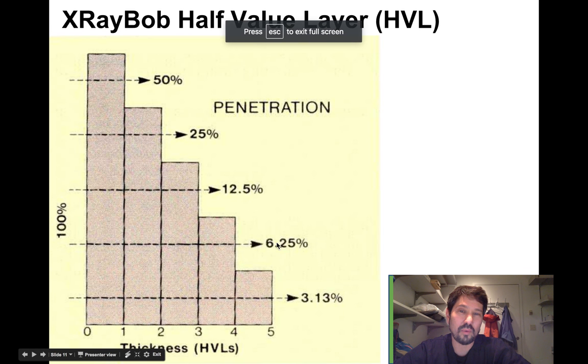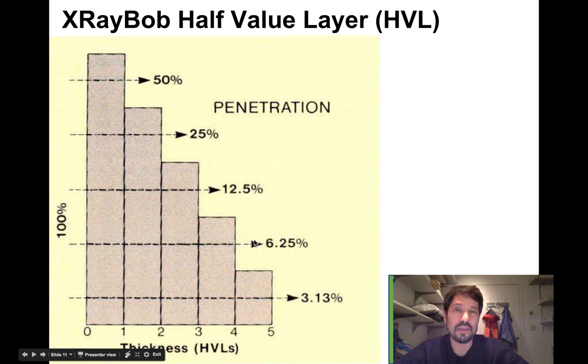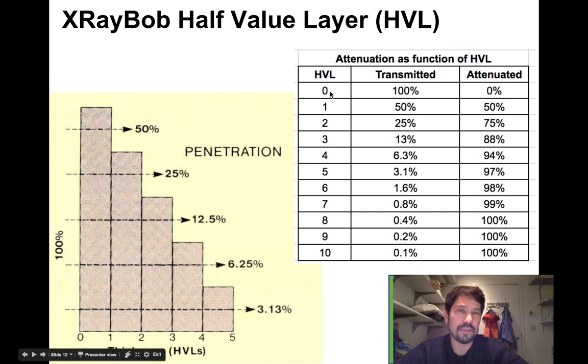The fourth HVL would only allow 6.25% to transmit and the remaining would be attenuated. So we can build a table kind of like when we built half-life tables.